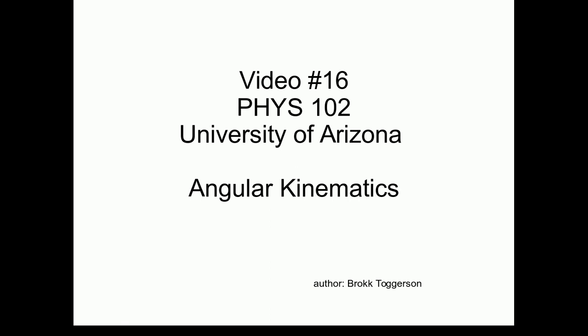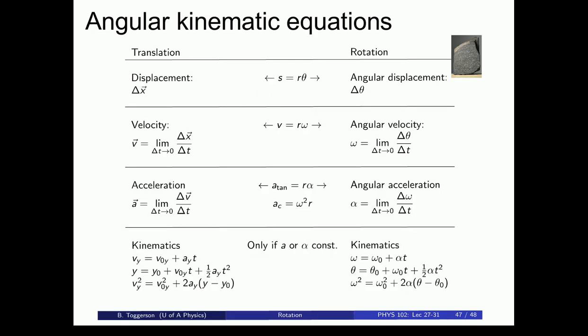Welcome to video number 16 for Physics 102. In this video, we do an example problem using the angular versions of the kinematic equations. At the end of class last time, we solved this version of our Rosetta Stone that connects our translation variables to our rotation variables. At the end of class, you translated our kinematic equations in translational variables v, and a, and y, into new versions using our rotational variables, omega,